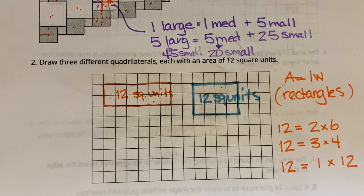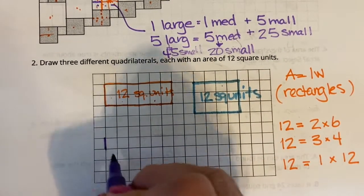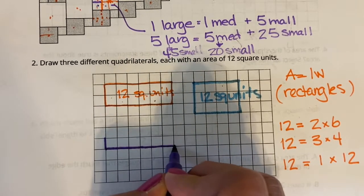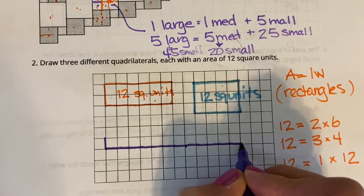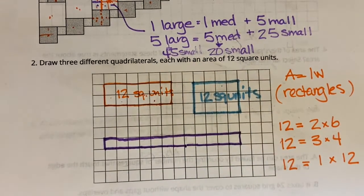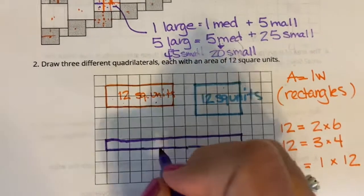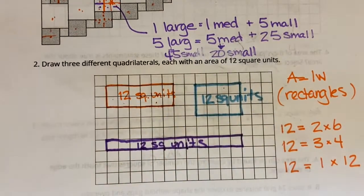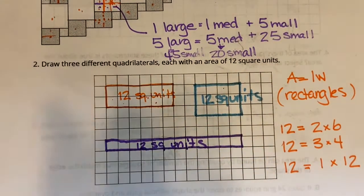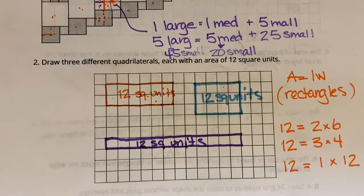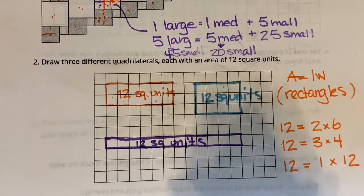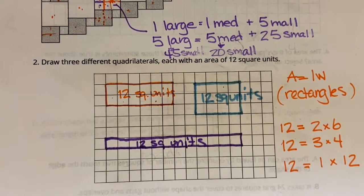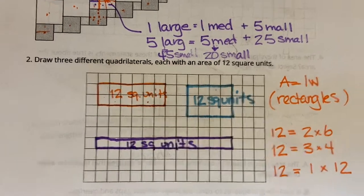And then if I did 1 times 12 — just 1 square wide and 12 squares long. Not the best rectangle, but it also gives me 12 square units because there are 12 squares in there. So I could do it where they weren't equal. I'm going to do the easiest ones I can find — all three give me an area of 12.